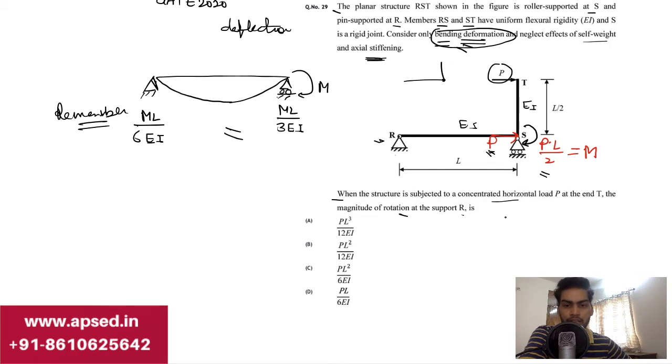We have already calculated this value of M for our case, that is PL/2. Then we just have to put the value here. If it was asking for the near support, the value of rotation would be PL²/6EI, and for the far support, this value is coming as PL²/12EI. So PL²/12EI is the correct answer for this question.